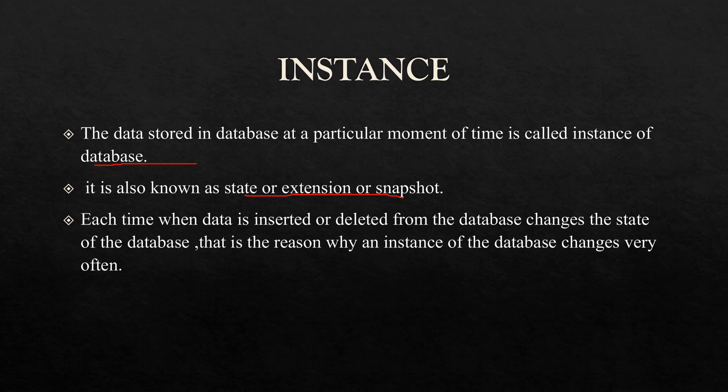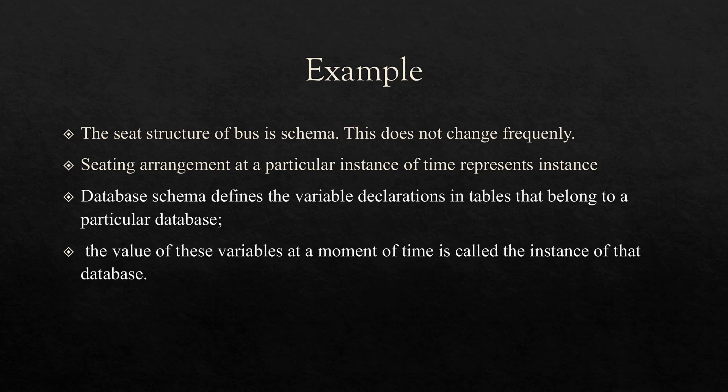Let us consider an example. Let us say we have a bus with a certain number of seats and a capacity of passengers. In this case, the seat structure of the bus is the schema — it does not change frequently. But the seating arrangement at a particular instance of time represents the instance, because the seating arrangement of people may change at different instances of time.